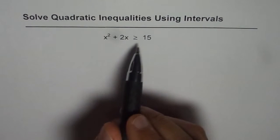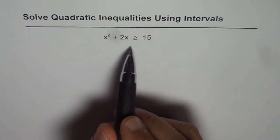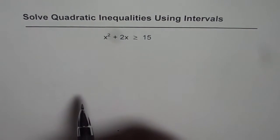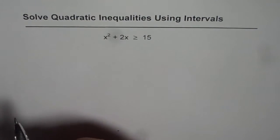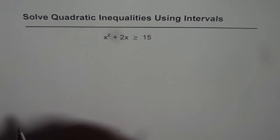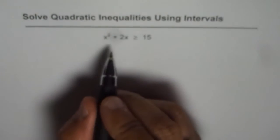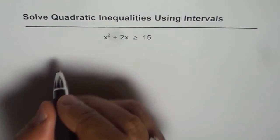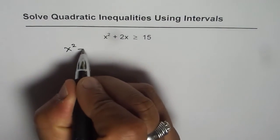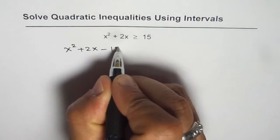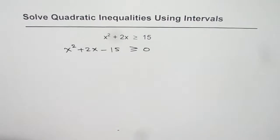To solve these inequalities, it's a good idea to bring all the terms together to one side. Write the equation in standard form and then solve the inequality. So the first step is to write it in standard form — take all the terms on one side. So we get x squared plus 2x minus 15 greater than or equal to 0.